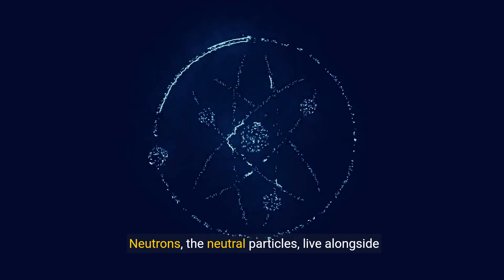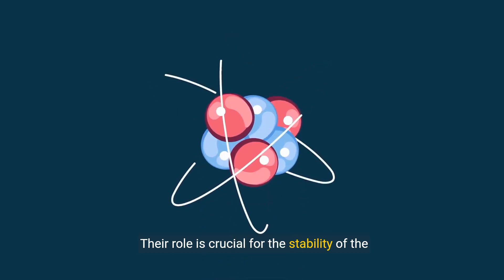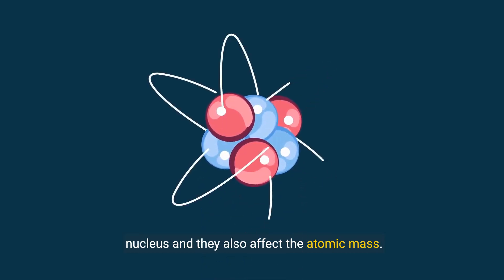Neutrons, the neutral particles, live alongside protons in the nucleus. Their role is crucial for the stability of the nucleus, and they also affect the atomic mass.